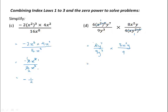If we simplify each fraction first, we find 3 goes into 6 twice and into 9 three times. And y cubed will divide into y to the power 7 leaving y to the power 7 take 3, or y to the power 4. So the first fraction simplifies to 2y to the power 4 over 3. For the second fraction, 4 divides into 4 once and into 8 twice, so this becomes 2x squared y over 1. The final multiplication gives 2 times 2 is 4, times x squared, times y to the power 4 times y, or y to the power 4 plus 1 which is y to the power 5, and in the denominator we have 3 times 1 which is equal to 3.